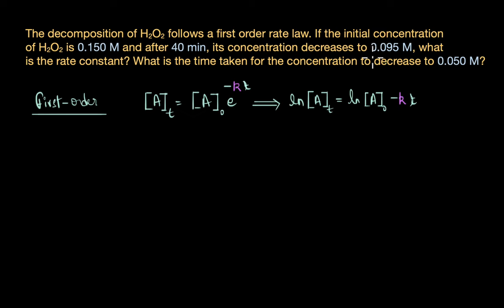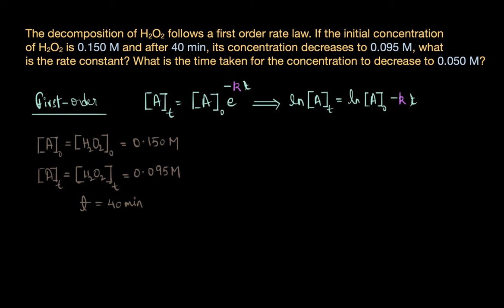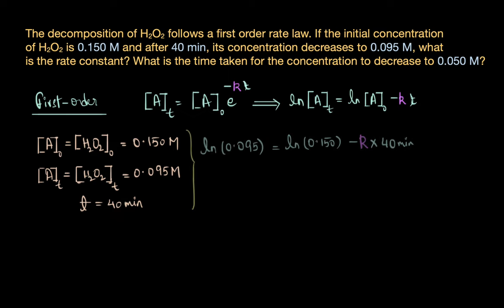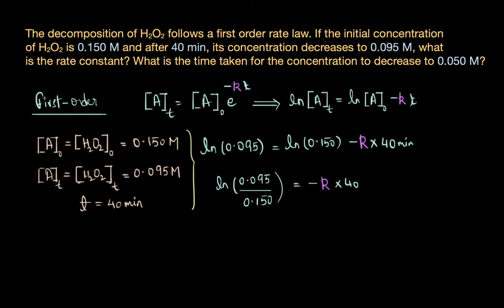Let's substitute the given values into the equation. A₀ is 0.150 molar, A_t at t = 40 minutes is 0.095 molar, and t = 40 minutes. Substituting these values gives: ln(0.095) = ln(0.150) − k × 40. Solving this equation, we get k ≈ 0.0114 min⁻¹. This is the rate constant of our first order reaction.